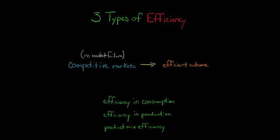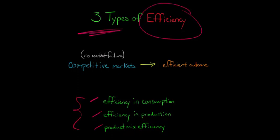But what do we mean when we say efficient or efficiency? There are three types of efficiency that we can think about in terms of the economy: efficiency in consumption, efficiency in production, and product mix efficiency. All three of these types of efficiency are essential to have Pareto efficiency.